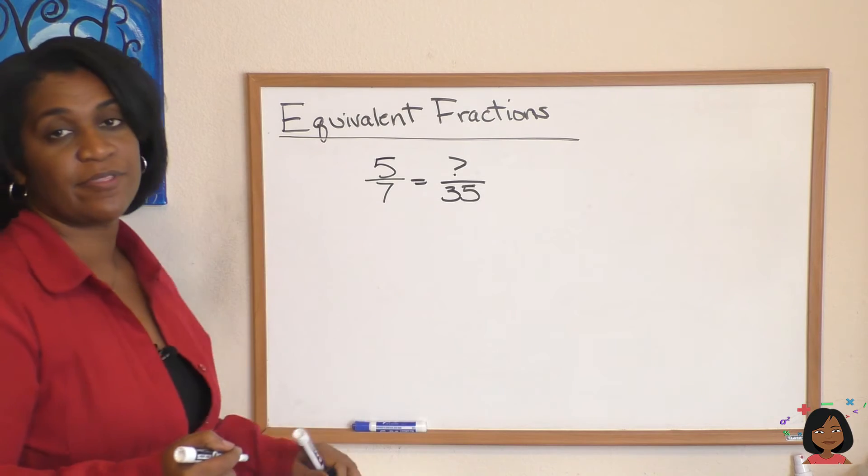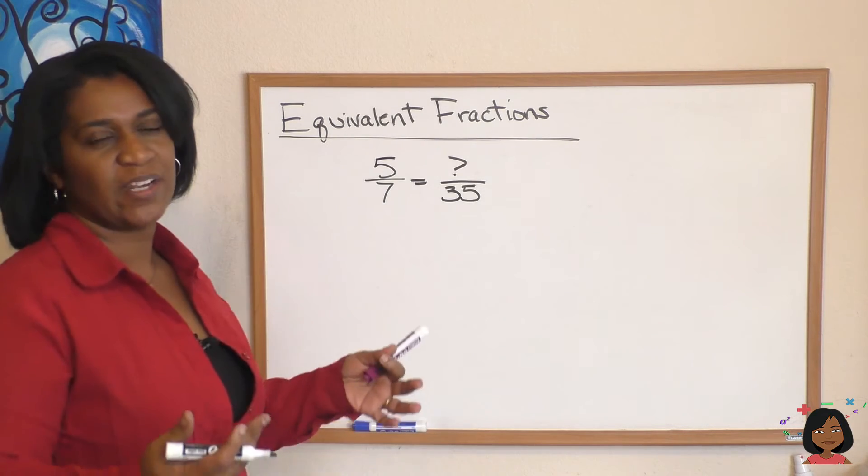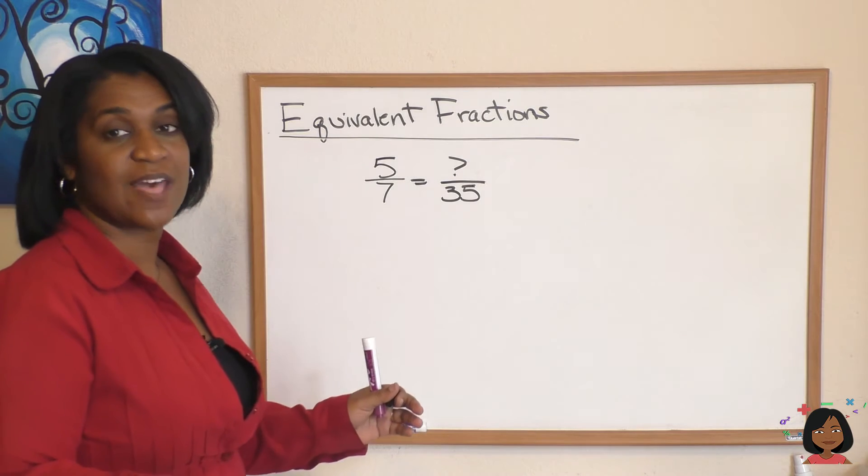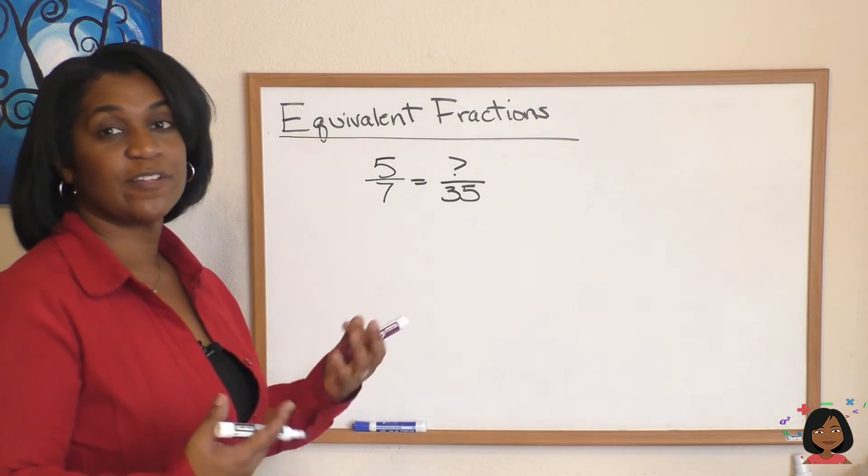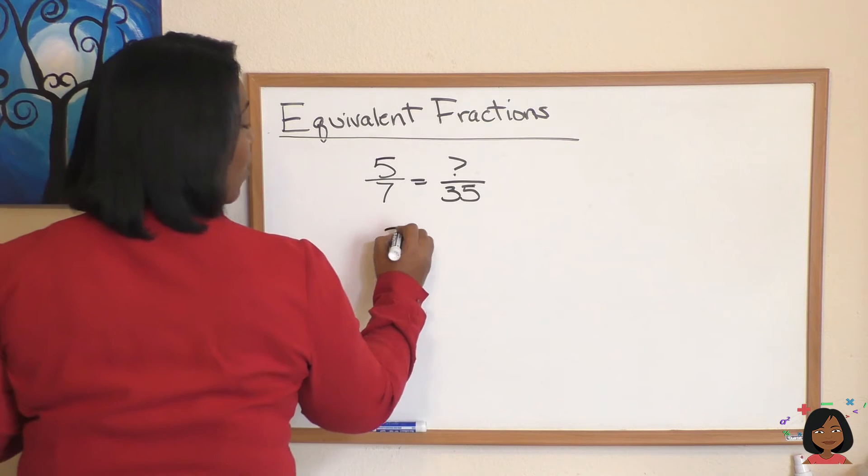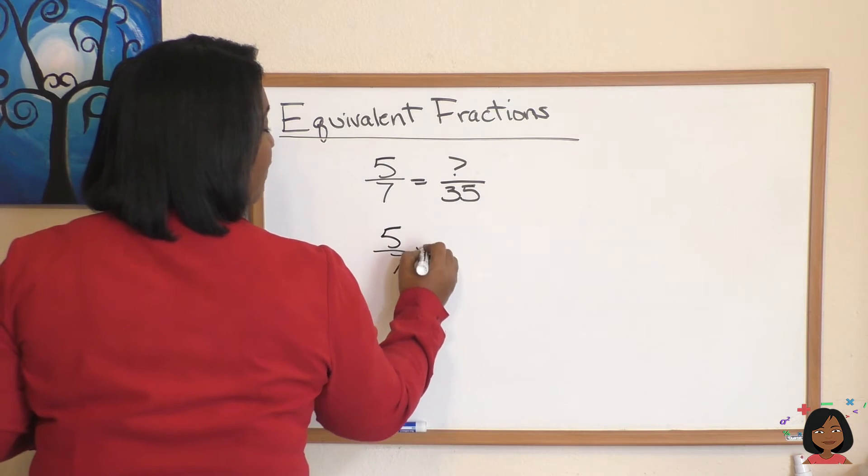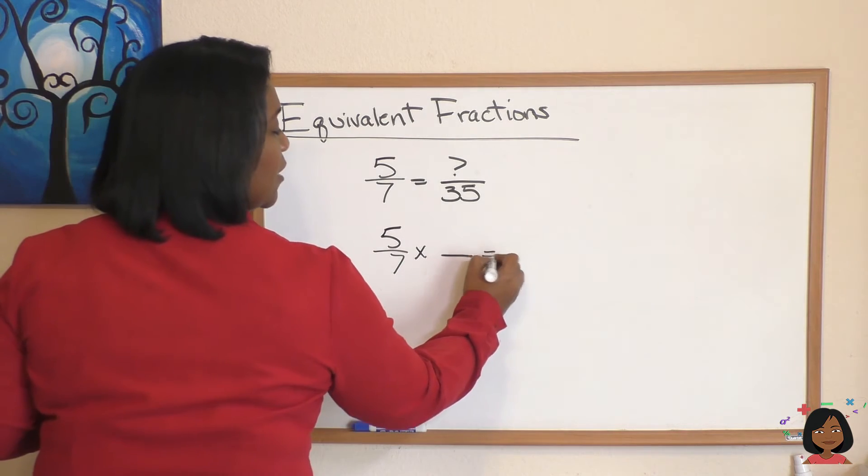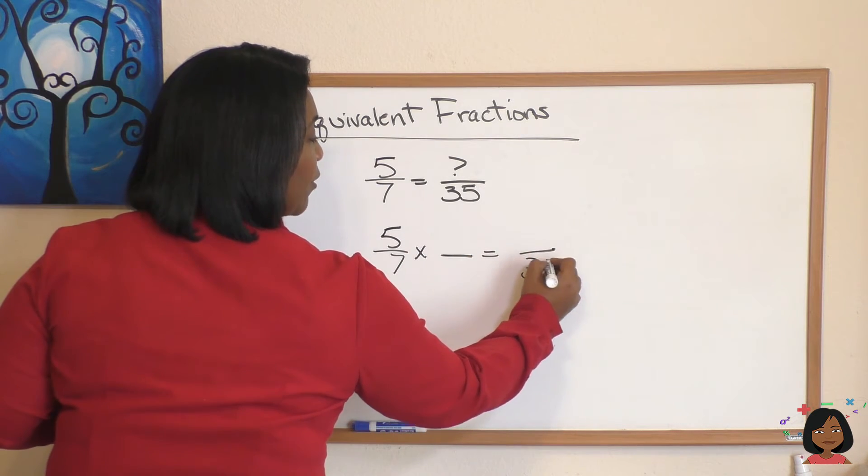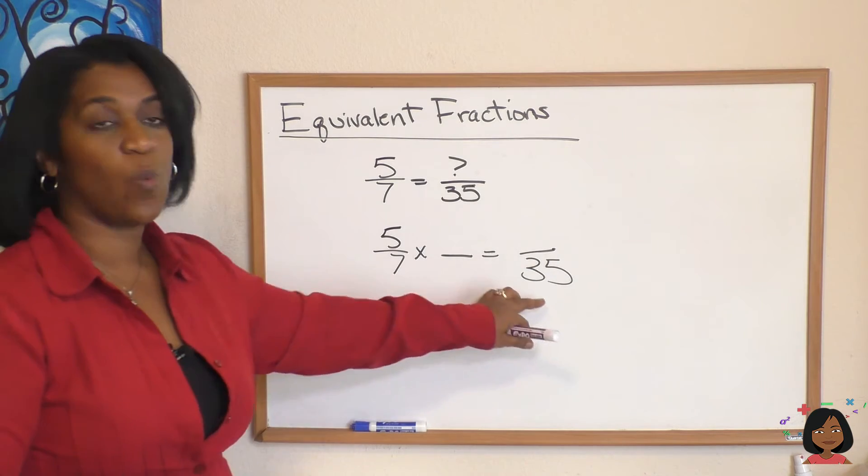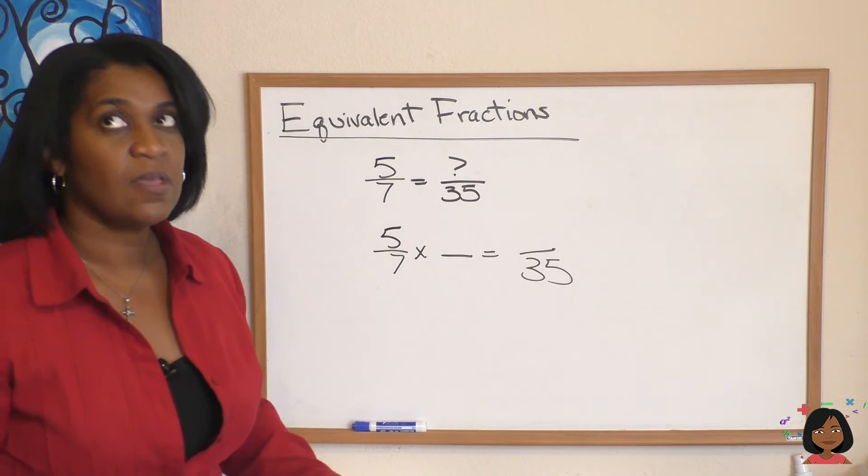Let's take a look at this. So I have five-sevenths equals what number over 35. See, I want to take my five-sevenths and I want to find an equivalent fraction with a denominator of 35. Well, if I write it out, I need five-sevenths times some fraction is going to give me a number over 35. Well, seven times what is 35? Oh, seven times five is 35.